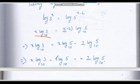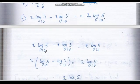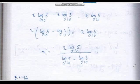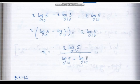Rearranging: x log 5 minus x log 3 equals 2 log 5. Therefore x equals 2 log 5 divided by (log 5 minus log 3).